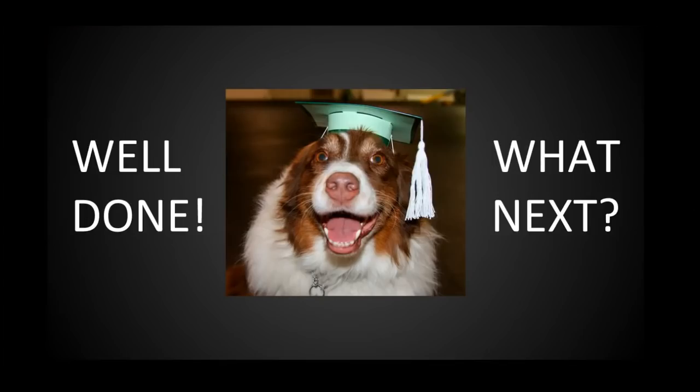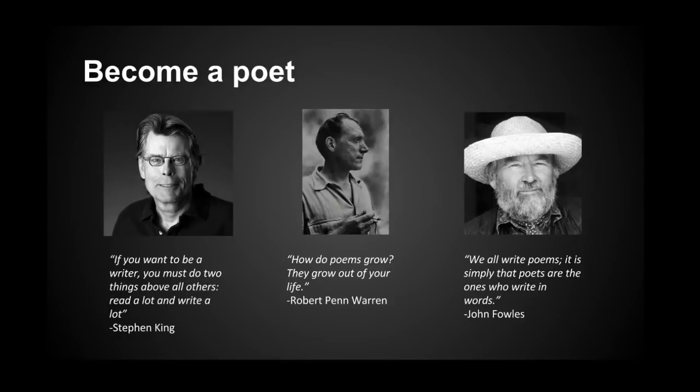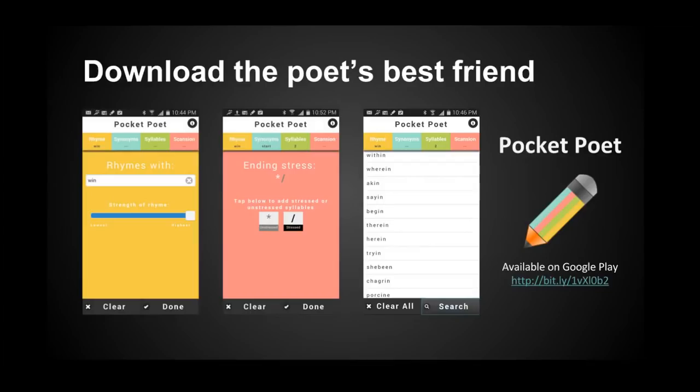And with that, we are at the end of our tutorial. So where do you go from here? You become a poet. If you want to be a writer, you must do two things above all others: read a lot and write a lot. Where do you get these poems from? How do poems grow? They grow out of your life. And if there's one thing that you should take away from this tutorial, it is that we all write poems — it is simply that poets are the ones who write them in words.